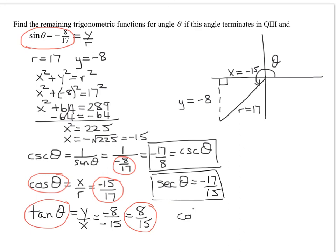The last one, what's the reciprocal of the tangent function? The cotangent function. So all we have to do is take the reciprocal of the tangent function. That means flip this fraction upside down. And I'm going to get 15 eighths.